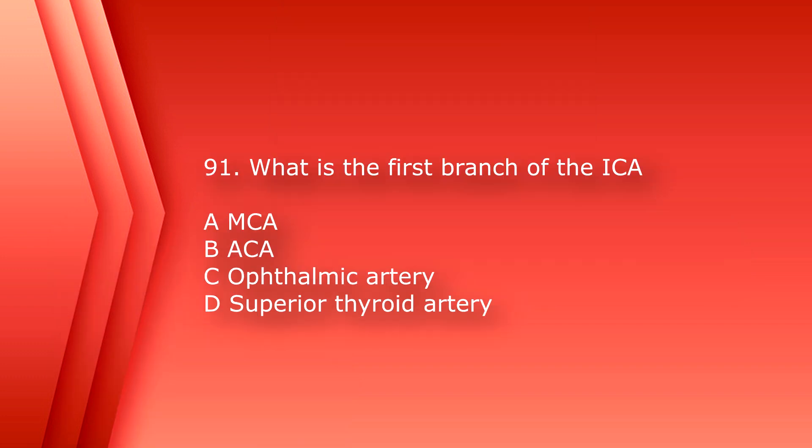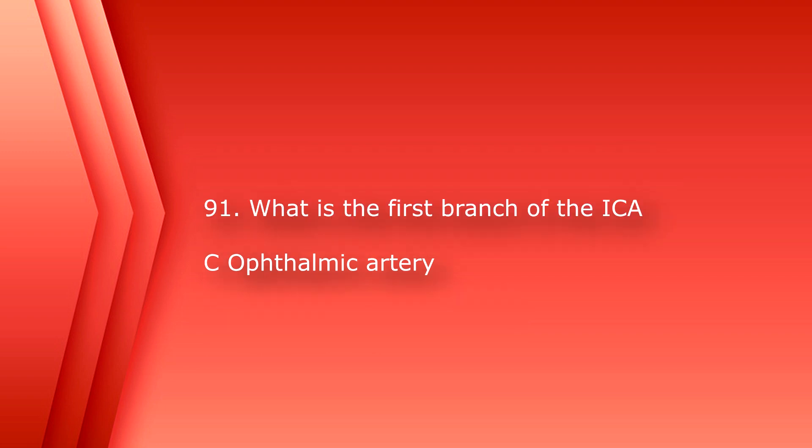Number 91: what is the first branch of the internal carotid artery? A. Middle cerebral artery. B. Anterior cerebral artery. C. Ophthalmic artery. Or D. Superior thyroid artery. The answer is C. Ophthalmic artery.